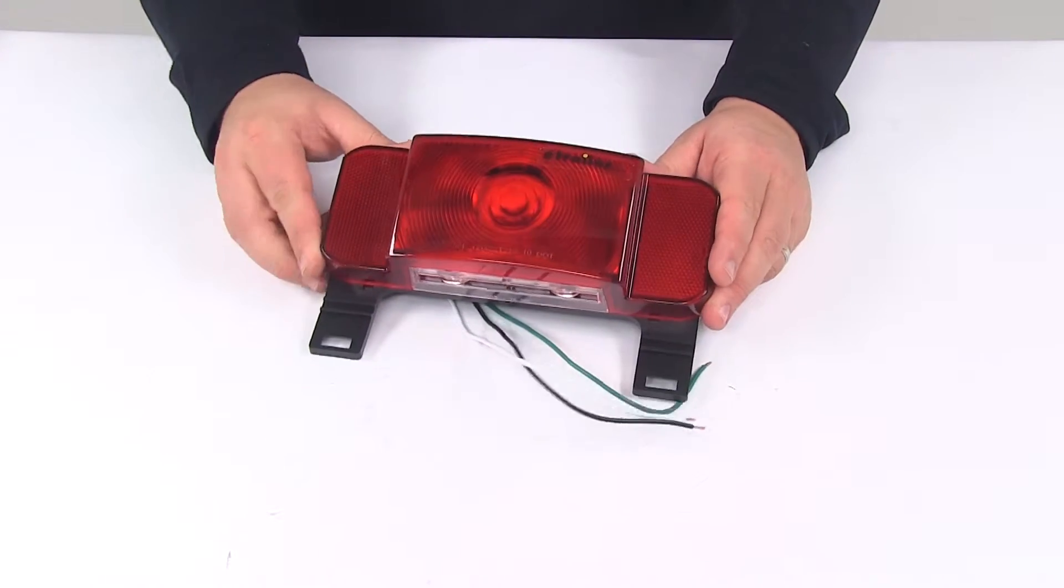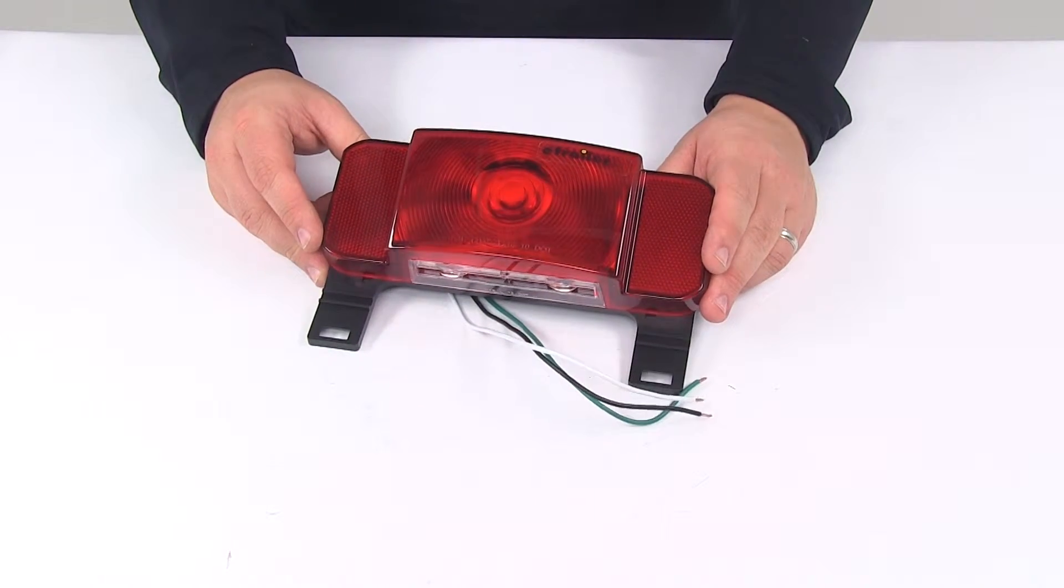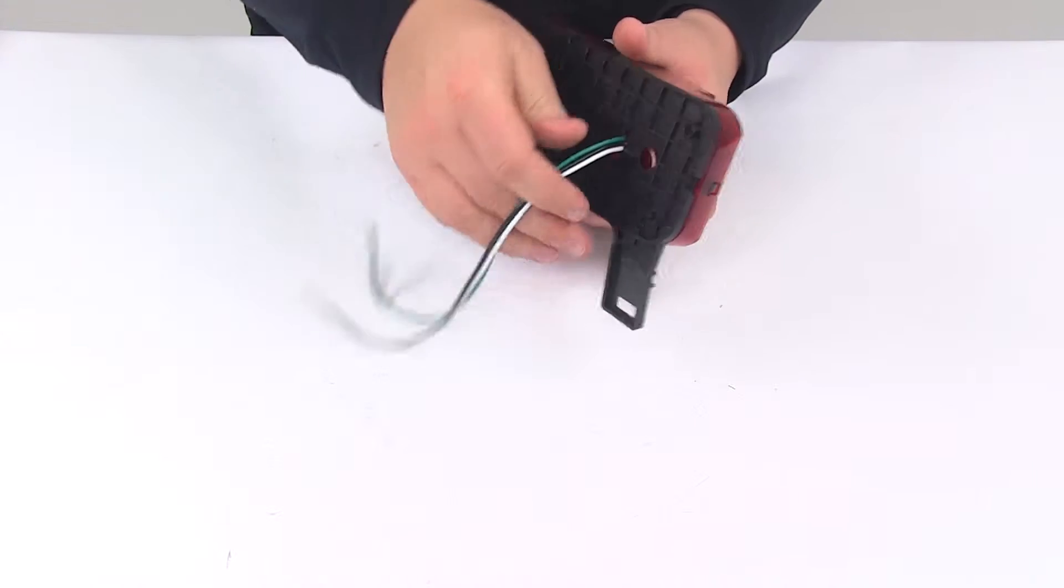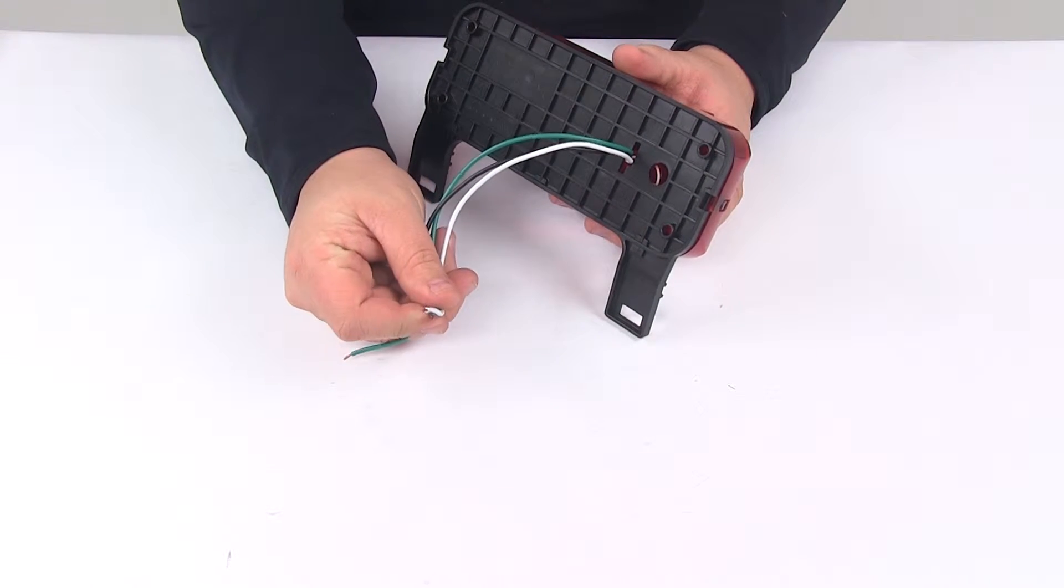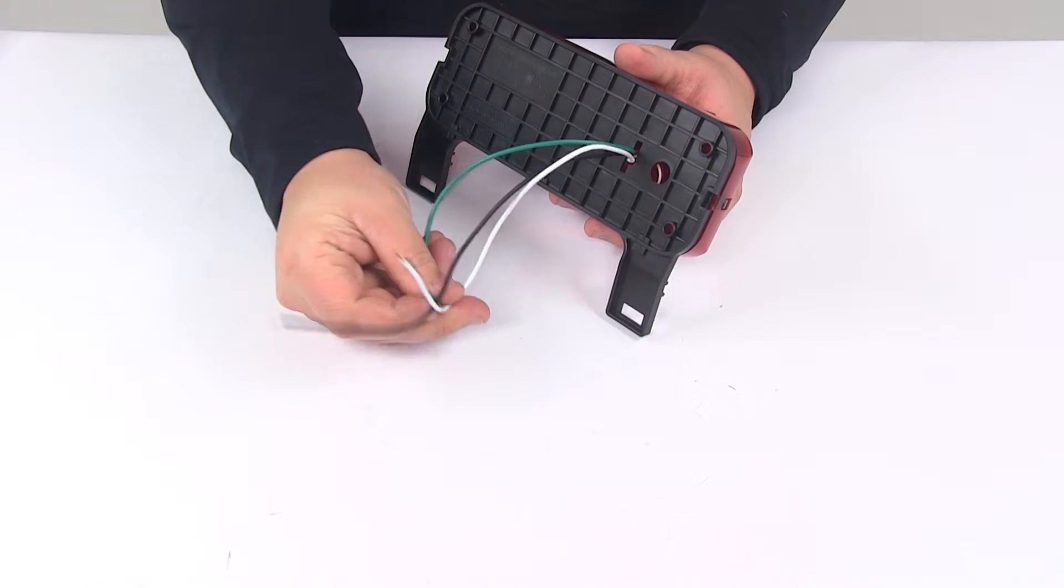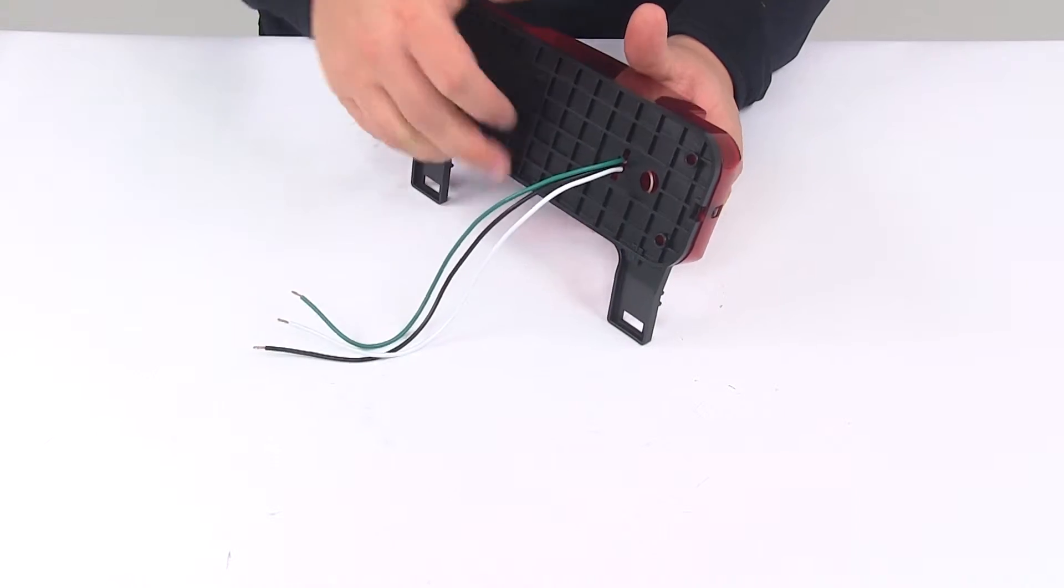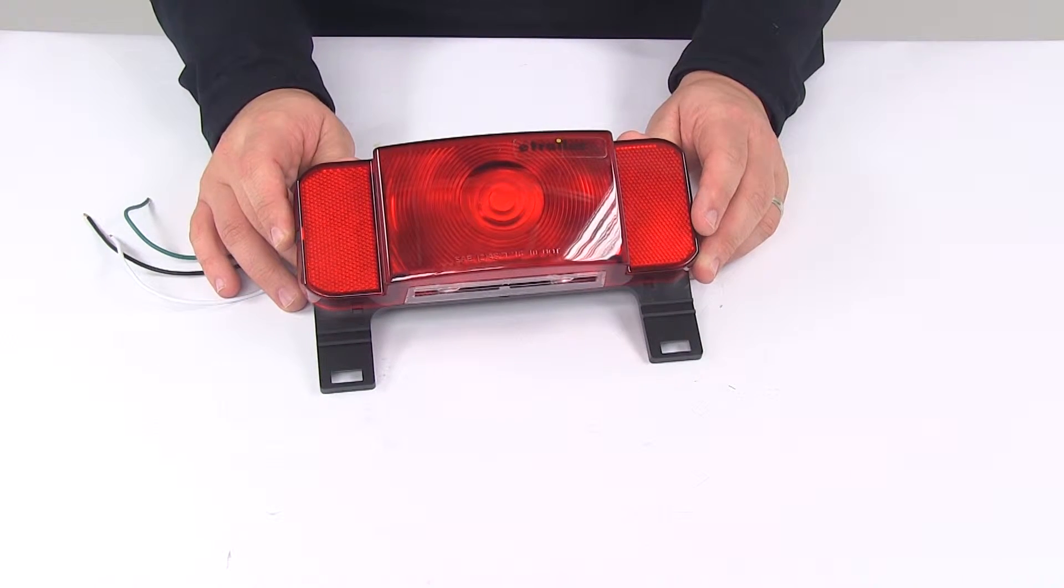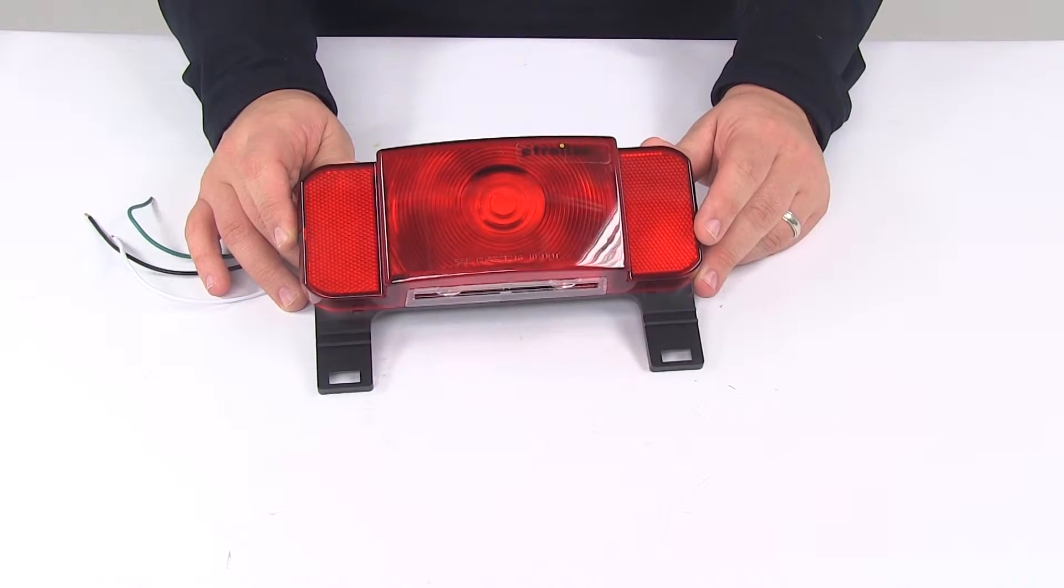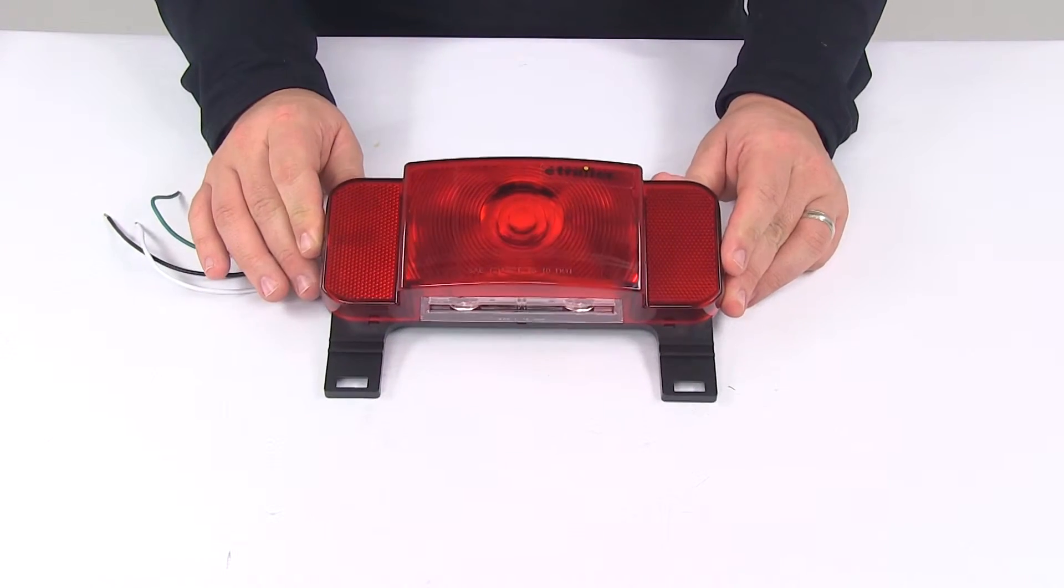This is designed to be a surface mount installation. Hardware is not included. It contains a three wire design: white is for ground, black is for your tail lights, and green is for the stop and turn signal light. It is Department of Transportation compliant, meeting FMVSS and CMVSS 108 requirements for automotive lighting. Again, it is for the driver's side.